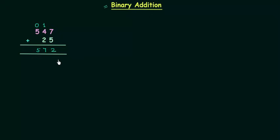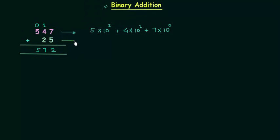5, 4, and 7 are the coefficients and we can write this as 5 multiplied by 10 raised to power 2. The weight of this position is 10 raised to power 2, plus 4 multiplied by 10 raised to power 1, plus 7 multiplied by 10 raised to power 0. We can do the same thing for 25: 2 multiplied by 10 raised to power 1 plus 5 multiplied by 10 raised to power 0.